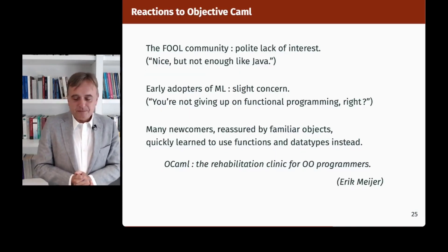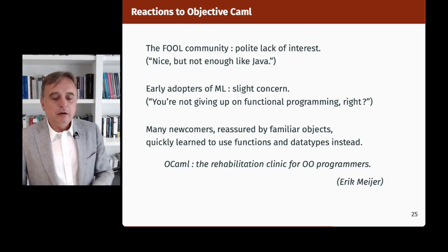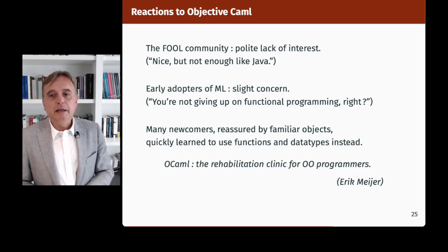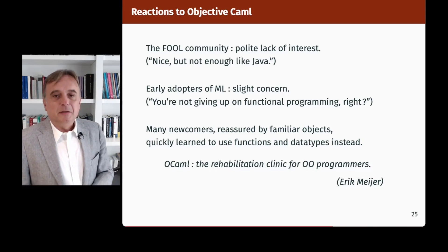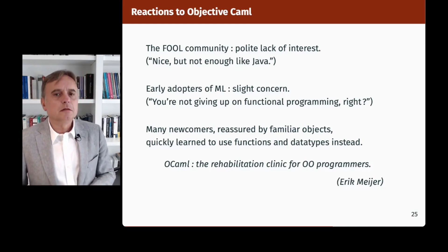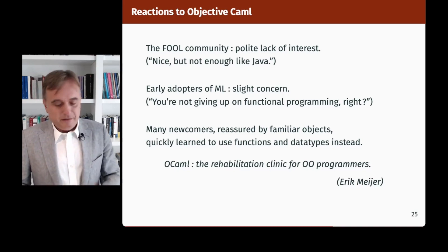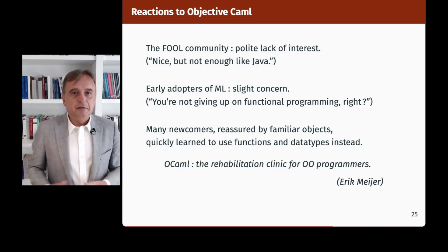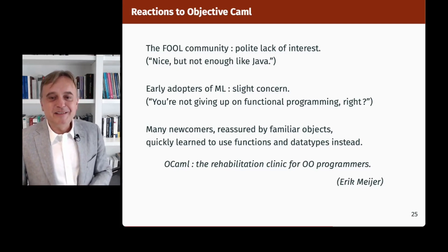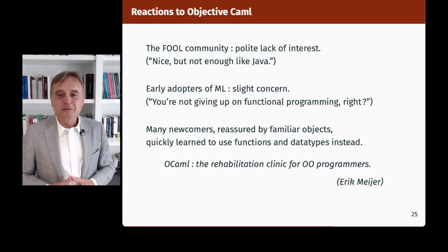The reactions were interesting. From the FOOL community — the type theorists — there was a polite lack of interest: 'That's nice, but it's not enough like Java.' It became obvious that nobody would ever agree on a single approach to typed object-oriented programming. Early adopters of Caml Light and Caml Special Light showed slight concern: 'You're not giving up on functional programming, right?' They had to be reassured. But we got many newcomers who were reassured by the availability of objects — something familiar to them — and could then learn fairly quickly how to do without objects and use functions and data types instead. That led Éric Meijer to call OCaml 'a rehabilitation clinic for object-oriented programmers.'